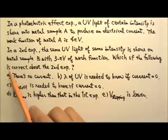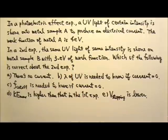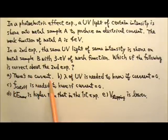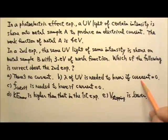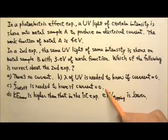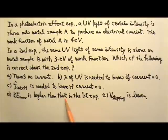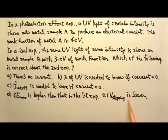Which of the following is correct about the second experiment? A: There is no electric current produced in the second experiment. B: The wavelength of the incident UV light is needed in order to decide whether there is an electric current in the second circuit or not. C: The cutoff frequency is needed in order to decide whether there is an electric current or not. D: The maximum kinetic energy of the ejected electron is higher than that in the first experiment. E: The stopping voltage is lower than that in the first experiment.